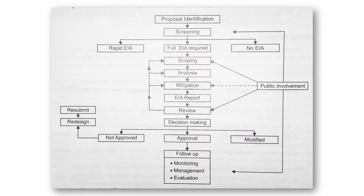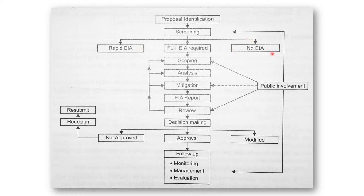Here is the overall process of EIA. First, a proposal is identified — for example, setting up a certain kind of industrial setup or project. Then screening is the first step. On screening, it is decided whether the project needs EIA or not. If it is a small project without much environmental impact, rapid EIA is done. Some projects are exempted from EIA entirely.